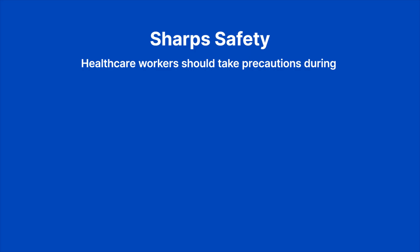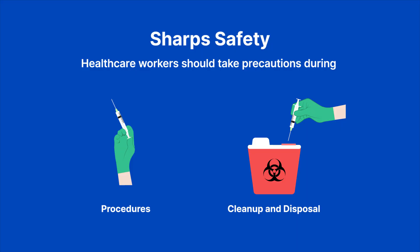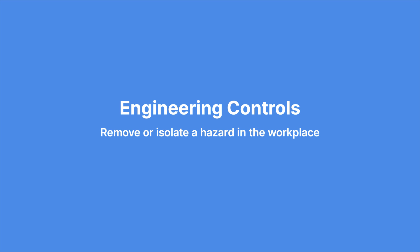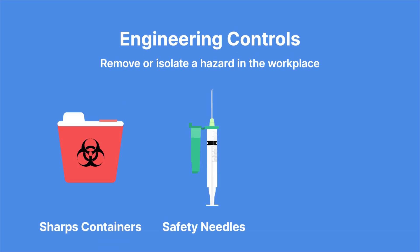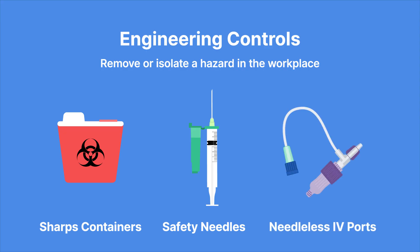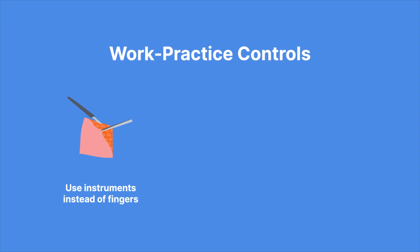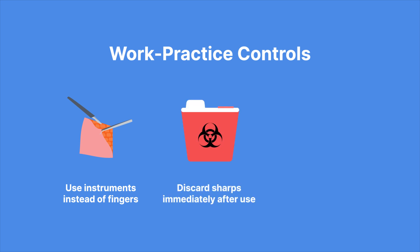When using or working around sharps, healthcare workers should take precautions during procedures, during cleanup, and during disposal. Engineering and work practice controls are the primary methods to reduce the risk of exposure from sharps instruments and needles. Engineering controls are any equipment which remove or isolate a hazard in the workplace, like sharps containers and safety needles, including technology-based solutions such as self-sheathing anesthetic needles, safety scalpels, and needleless IV ports. When engineering controls are not available, work practice controls should be used. These behavior-based controls reduce the risk of exposure by changing the way a healthcare worker performs a task — for example, using instruments instead of fingers for tissue retraction or palpation during suturing and administration of anesthesia, or not passing a syringe with an unsheathed needle by hand. Sharps should be discarded immediately after use, and healthcare workers should avoid recapping needles whenever possible.